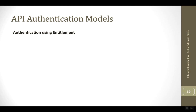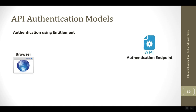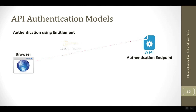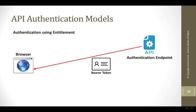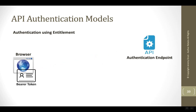There's also authentication using entitlements. In this model, we still pass over some kind of a credential to get logged into the authentication endpoint. The authentication endpoint will generate some type of a bearer token — a lot of times these are formatted as JWTs, or JSON Web Tokens. The bearer token keeps track of how long the token is good for — the session length — and also keeps track of the permissions that the client has. These are often called claims, at least in the OAuth models.